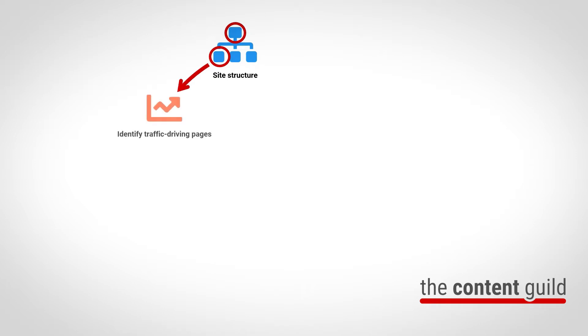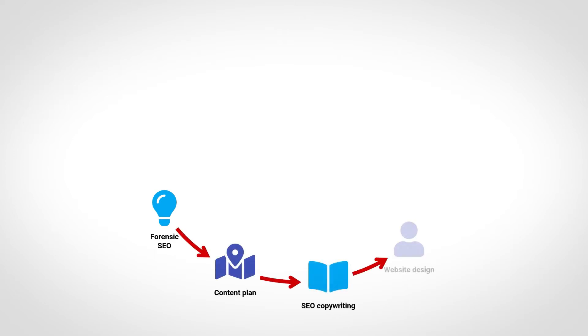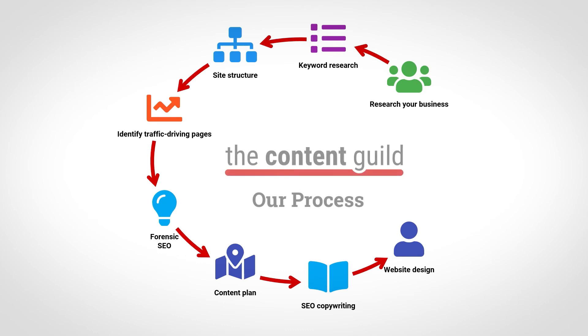We call it forensic SEO because it's so nitpicking — it really is detailed. With this, we're focusing on a single topic and identifying all the things that somebody would want to know about that topic, which is going to go on a page. Out of that research comes a content plan which specifically outlines exactly what needs to go on the page. At that point we can feed that through to our copywriters — they write the copy and then it can be fed through to the design.